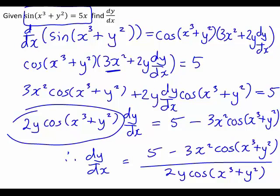In some cases it might involve a bit more manipulation — if there were several terms involving dy/dx, you'd take it out as a common factor before dividing. But this gives a general example of how to do implicit differentiation when there is a function of a function involved, which in this case was sin(x³ + y²).